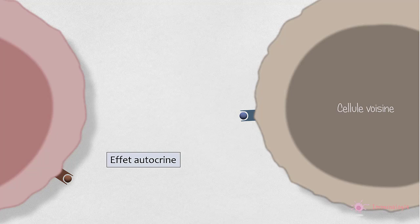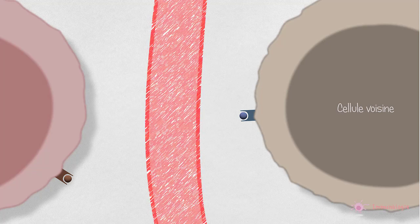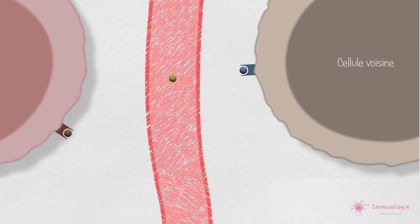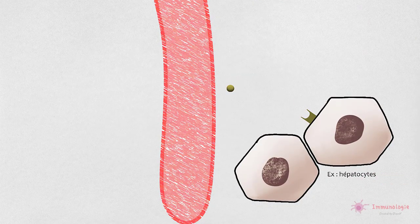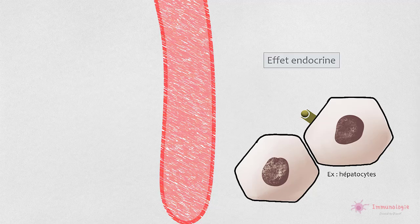Enfin, les cytokines qui doivent traverser la circulation sanguine avant d'atteindre leur cible sont dites endocrines, c'est-à-dire systémiques.